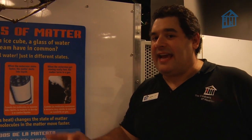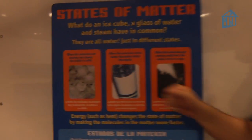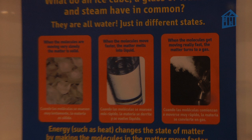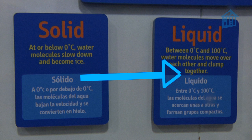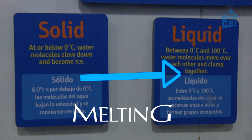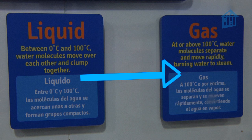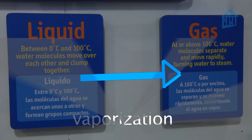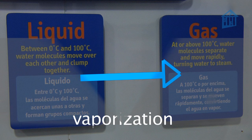But why is that? In order to understand that, first we've got to talk about states of matter. All types of matter come in three states: solid, liquid, and gas. All matter can move between these three states simply by either absorbing or losing heat. For example, when a solid like ice heats up, it turns into a liquid, namely water — that's melting. And when a liquid heats up, like water on a stove, it turns into a gas, namely steam or water vapor. And that's called vaporization, which is just a fancy way of saying boiling.